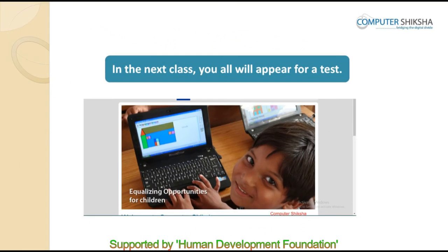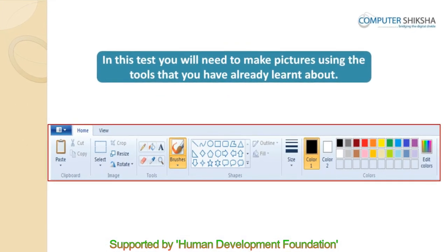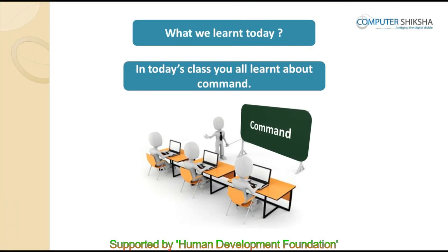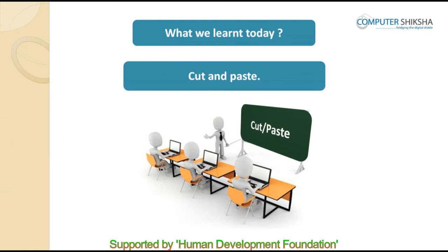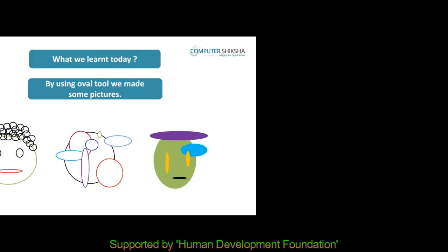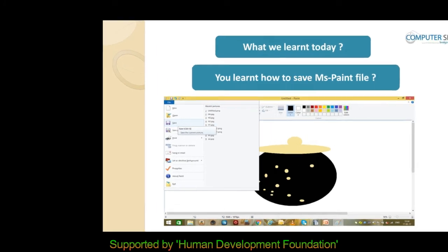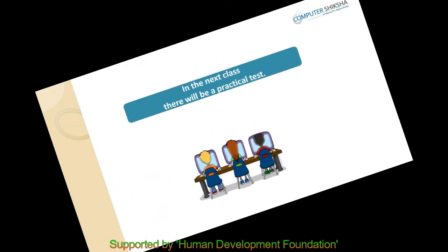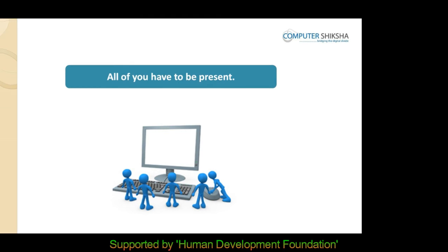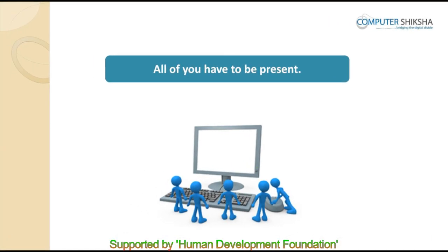In the next class, you will appear for a test. In this test, you will need to make pictures using the tools you have already learnt about. In today's class, you all learnt how to do undo, redo, copy, cut, and paste. You also learnt how with the help of the oval tool, you can make some pictures. And you also learnt how to save files. In the next class, you will all give a practical test, so you must all remain present for tomorrow's class. Thank you.